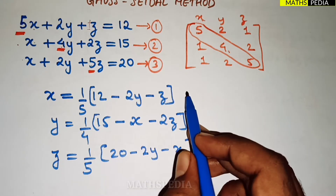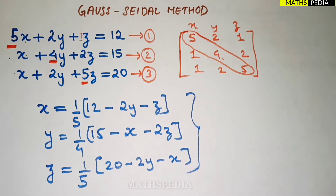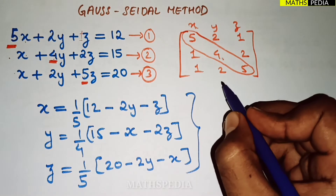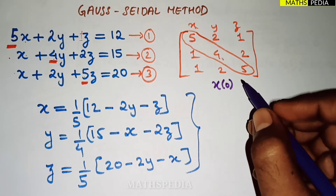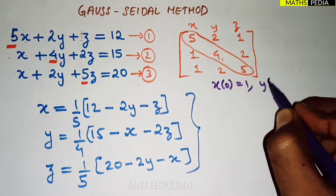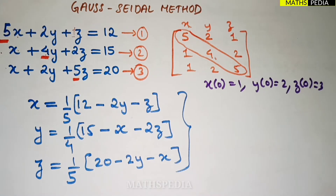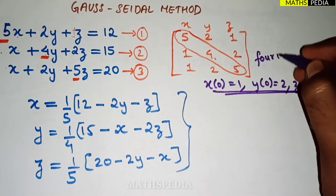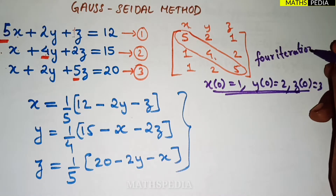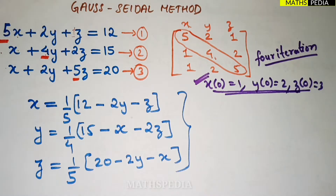Now, one important thing to note: in this problem, the initial approximation values are given as x(0) = 1, y(0) = 2, and z(0) = 3. They have also specified that we must perform four iterations. If initial values are not given in the question, you can assume x(0) = 0, y(0) = 0, z(0) = 0.